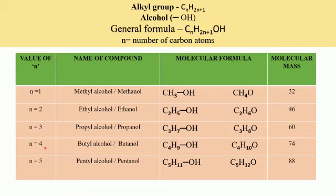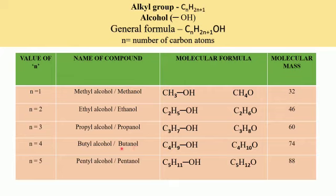For N equal to 4, the formula becomes C4H9OH, or we can write it as C4H10O. Since there are 4 carbon atoms, it is a derivative of butane. The parent alkane is butane, and the IUPAC name becomes butanol — the E in butane is replaced by O-L. The common name is butyl alcohol.